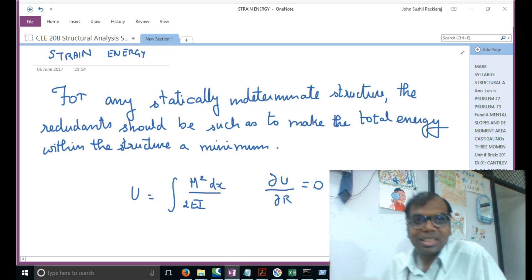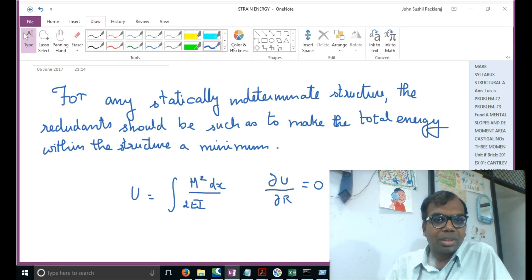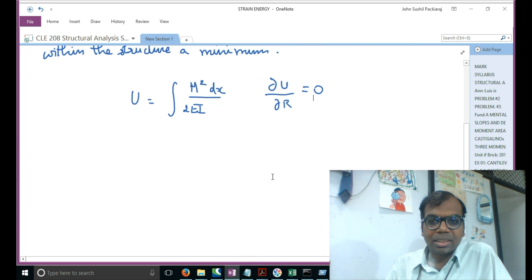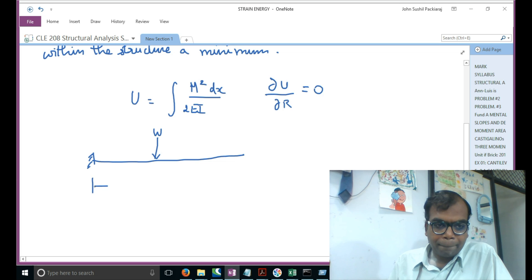We'll solve the same problem as before. We're taking a cantilever beam and applying a point load W at mid-span. Let this W be at point C, and we'll have a redundant reaction B over here. This is redundant to degree one, so we need to remove one reaction. We'll remove the reaction at B.